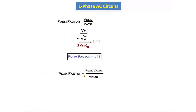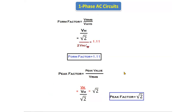The peak factor formula is peak value divided by RMS value. The peak value is Vm and V_rms = Vm/√2, so Vm cancels and the peak factor equals √2.